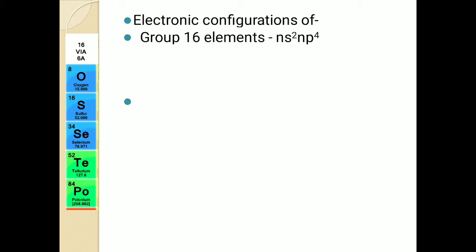You have all studied in 11th standard in detail about how to write electronic configuration. Electronic configuration tells us about the arrangement of electrons in different shells, subshells, as well as orbitals. Now we will start with the first member of the 16th group, that is oxygen. Oxygen has atomic number 8, so the electronic configuration will be 1s², 2s², 2p⁴.